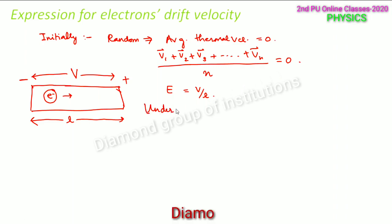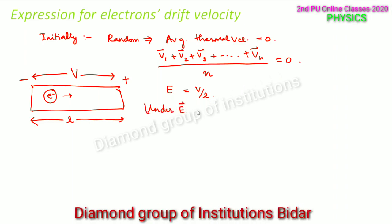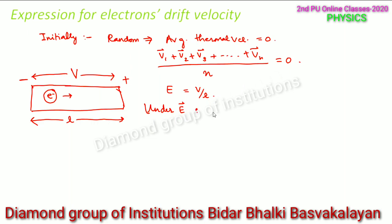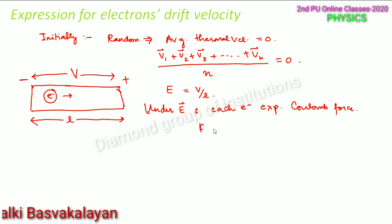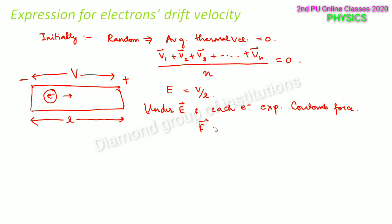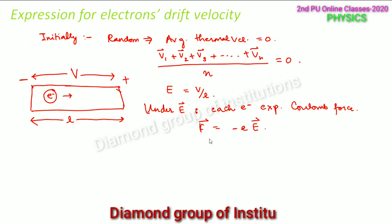Under the influence of this external electric field E, each electron experiences a Coulomb's force. Whenever an electric field comes into play, Coulomb's force also comes into play. The Coulomb's force F is equal to q into E. Here q is nothing but the charge on the electron, so this becomes e into E. This is the force experienced by each electron.